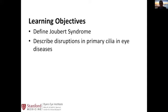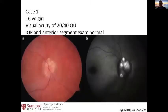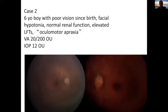The objectives are to define Joubert syndrome and to think about what disruptions in cilia are causing eye disease. The first case is a 16-year-old girl with 20/40 vision in both eyes. Anterior segment exam was more or less normal, but she has very apparent optic neuropathies and retinal findings.